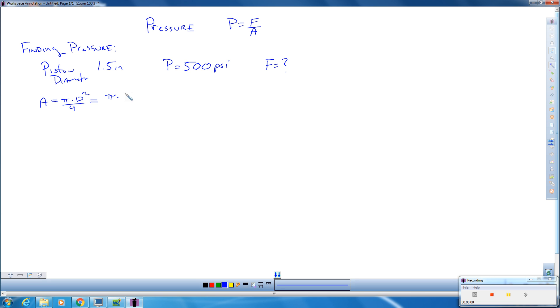So if we do pi times 1.5 squared divided by 4, we substitute all this in. You should get roughly around 1.767 inches squared. All right, so now we have the area.